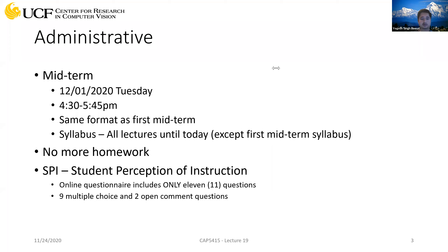There will be no more homework — we are done with all 10 homeworks. Also, a gentle reminder for the SPI student perception of instruction survey. I think some of you have already done that. For those who have not, there are only 11 questions: nine multiple choice and two open comments. I encourage you to complete this as soon as you get time.